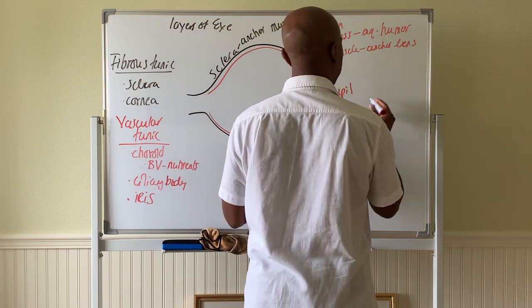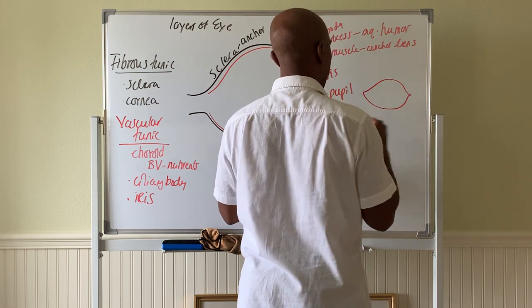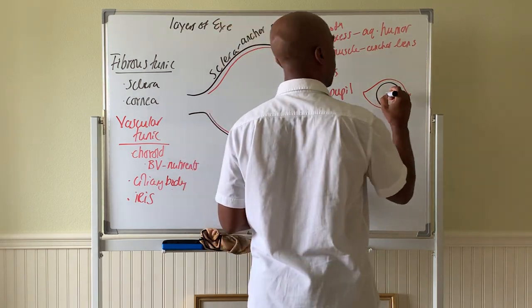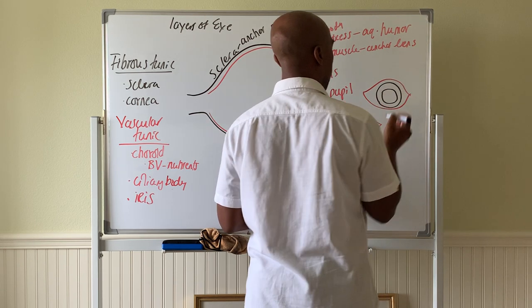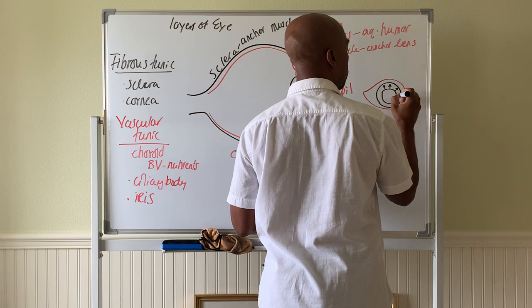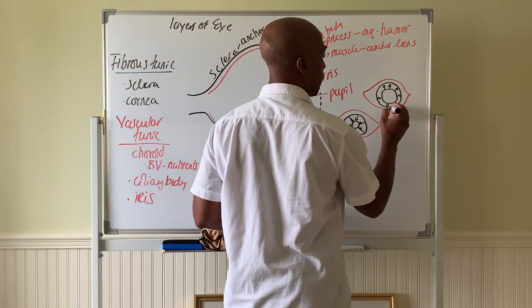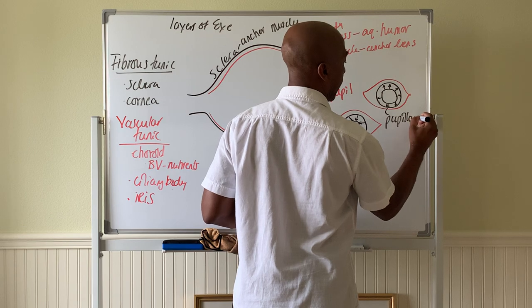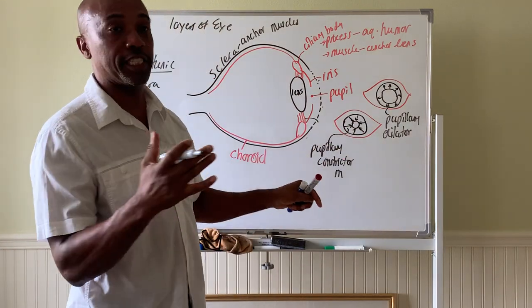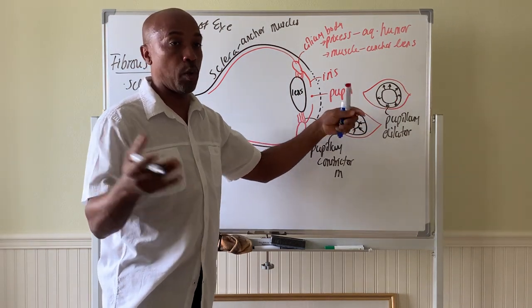And then the other muscle of the iris. Again, this is your iris here. That other muscle, its job is making the pupil big. So that muscle will pull the iris this way to widen the pupil. So that one is called your pupillary dilator muscle. And so the iris is basically two muscles together that control the diameter of the pupil, either get constricted or dilated, depending on what's going on.